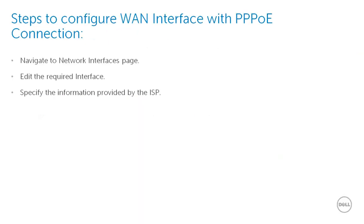In order to configure the SonicWall WAN interface with a PPPoE connection, we first need to navigate to the Network Interfaces page, edit the WAN interface required, and finally specify the username and password provided by the Internet Service Provider.